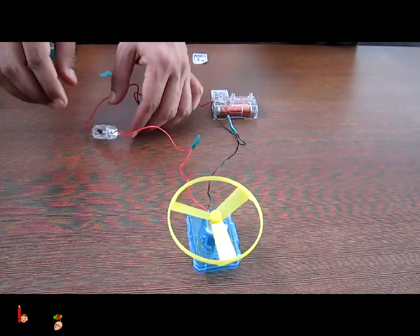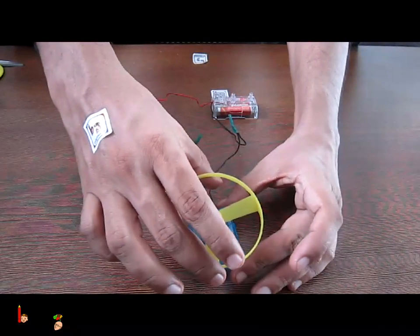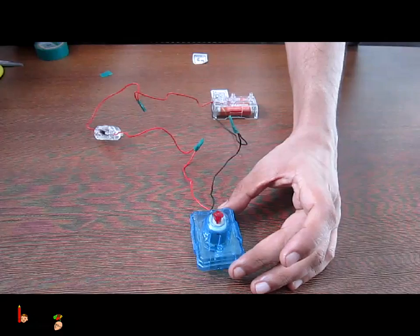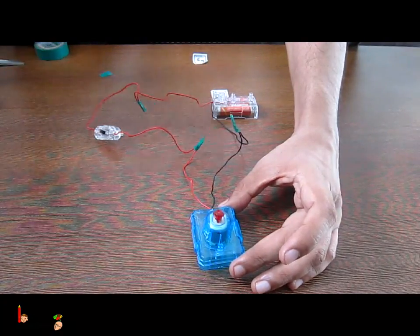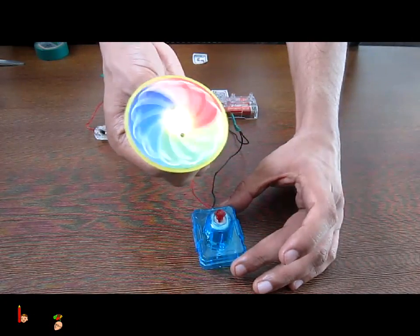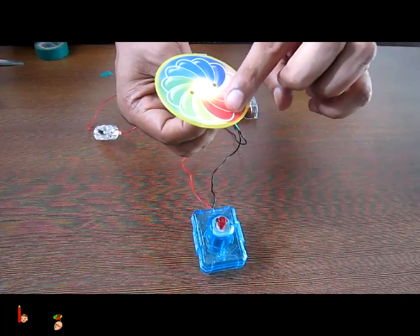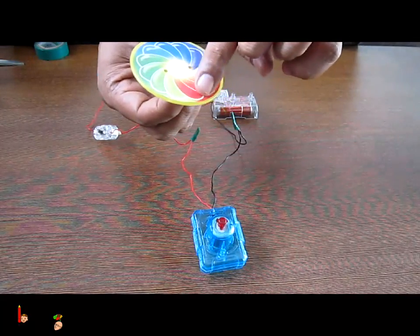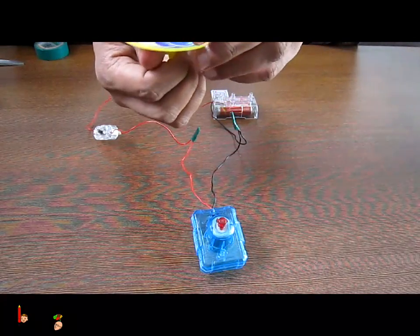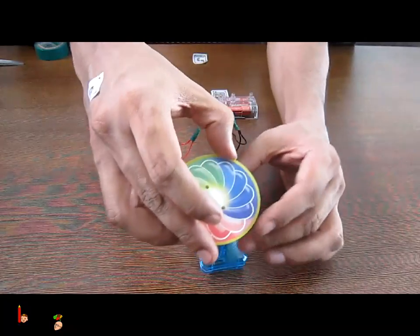Let's do one more thing. Instead of the ring, let's connect this color disc and see what happens. This color disc has three colors red, green and blue on top of it. Now let's connect that ring on top of the motor.